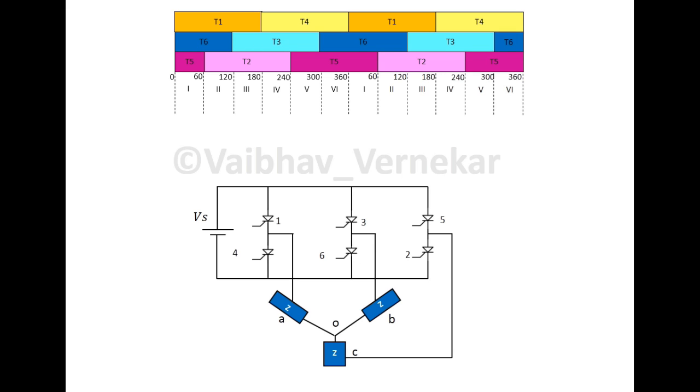In step 1, that is 0 to 60, thyristors 5, 6, 1 are on simultaneously. Similarly in step 2, 6, 1, 2, step 3, 1, 2, 3, step 4, 2, 3, 4, step 5, 3, 4, 5, and in step 6 thyristors 4, 5, 6 are conducting at once. The pattern repeats for further cycles.